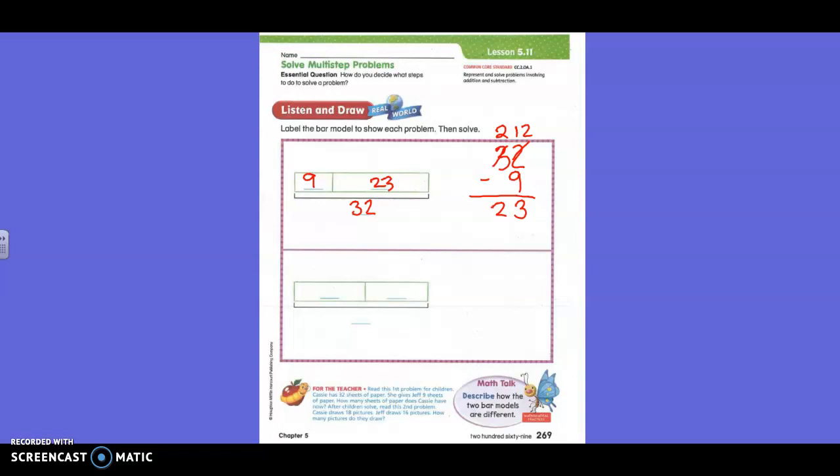Now I want you to pay attention to this. Look at these numbers in these boxes. 9 is the smallest number, right? It's in the smallest box. 23 is the next smallest or it's the middle number and it's in the box. The biggest number is on the line. That's always how they should go, okay? You need to make sure that you're putting the numbers in the right spots. Does that make sense? Okay, here's the next one.